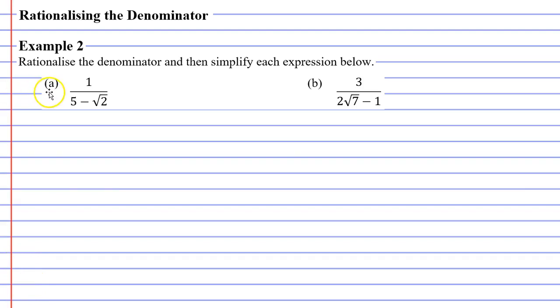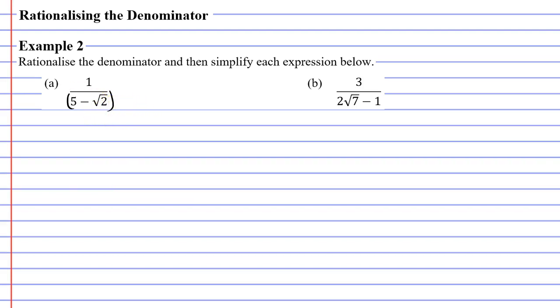Let's look at question A. We're going to focus on the denominator and think to ourselves: what can we multiply this by in order to rationalize the denominator? Remembering that when we multiply, we're multiplying the whole expression — which means that technically it's in brackets. We're going to multiply this expression by something that is almost exactly the same.